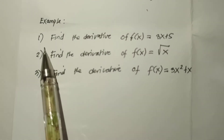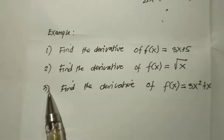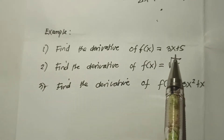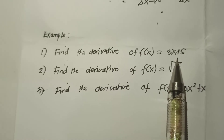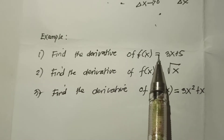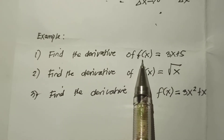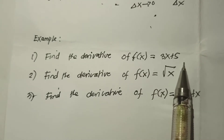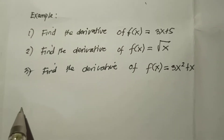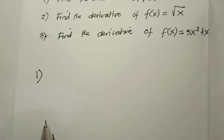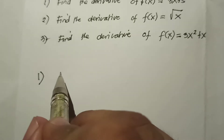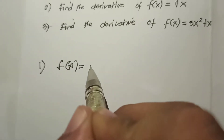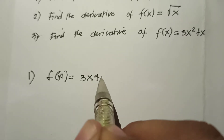At this point, let us answer these three problems. Let us solve first the basic one: find the derivative of the function f(x) = 3x + 5. By the use of the 4-step rule, our f(x) = 3x + 5.